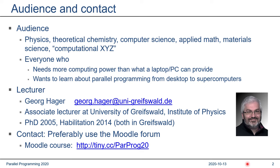My name is Georg Hager. I work at Friedrich Alexander Universität Erlangen-Nürnberg and I'm an associate lecturer at the University of Greifswald at the Institute of Physics. I did my PhD in 2005 in Greifswald and got my habilitation in 2014, also in Greifswald. You can contact me by email, but the preferred way is the Moodle forum, which is free for everyone in the Moodle course.